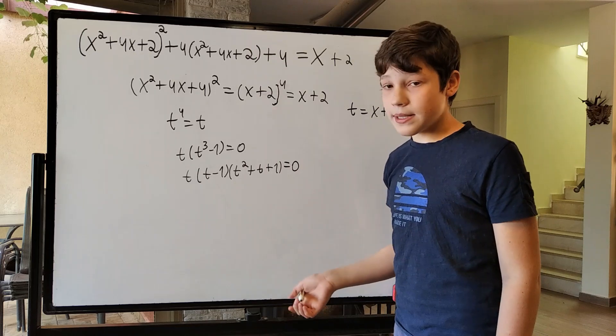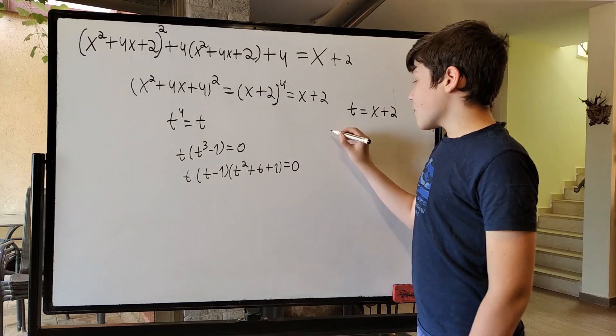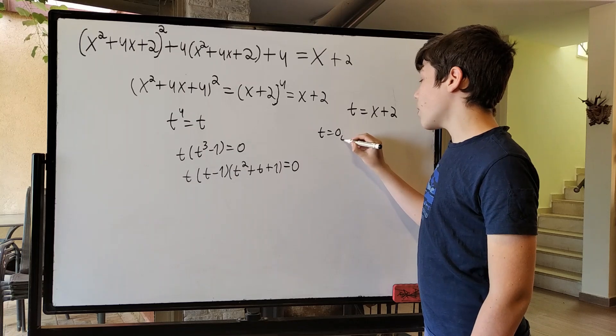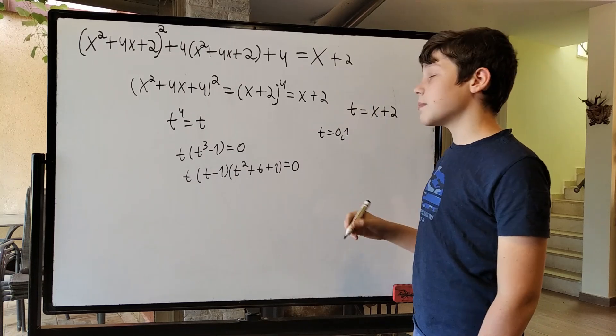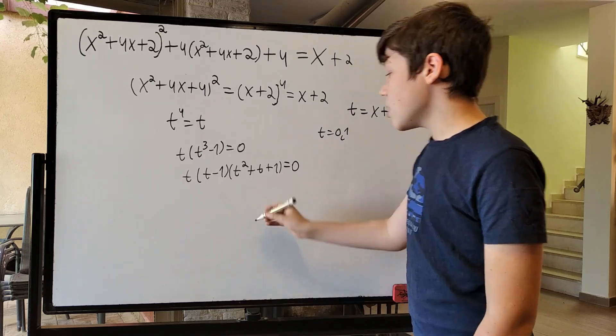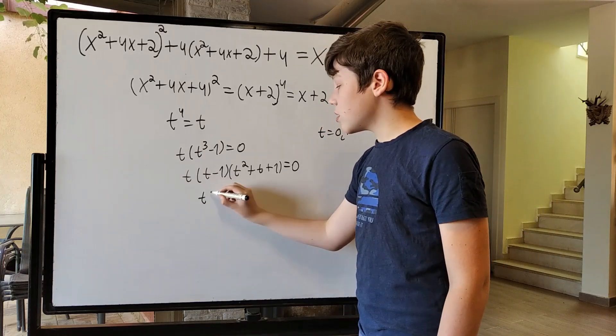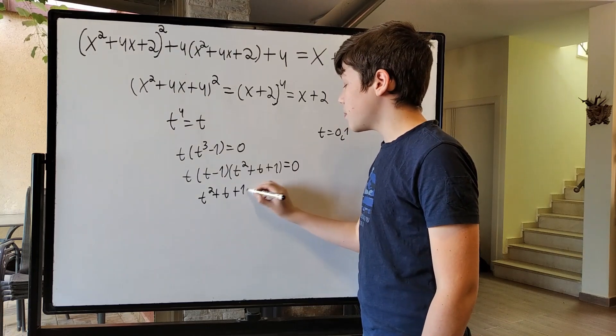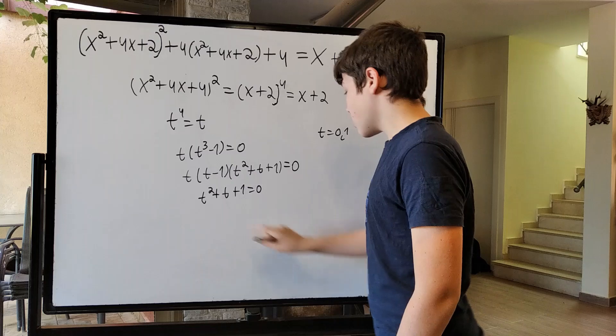So, these first two are easy. In these first two, t is either 0 or 1. We're going to write both solutions. We want all solutions. Now, let's quickly take care of this last one, which is t squared plus t plus 1, which is equal to 0.